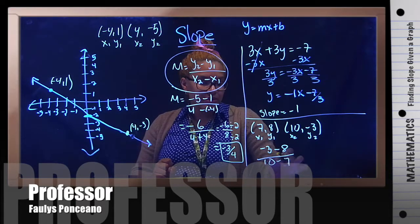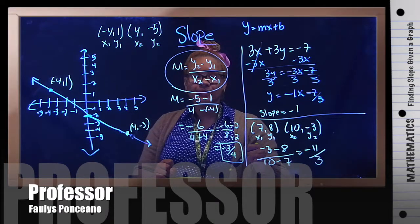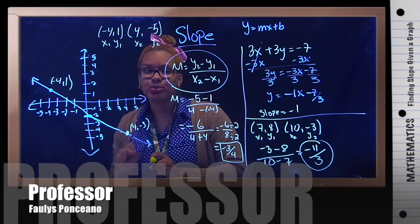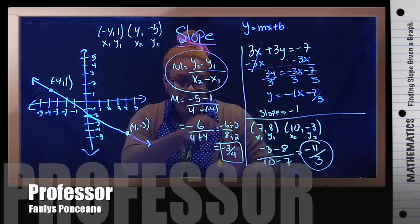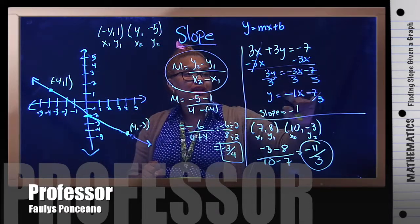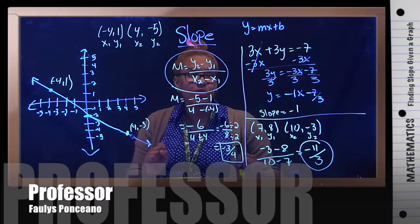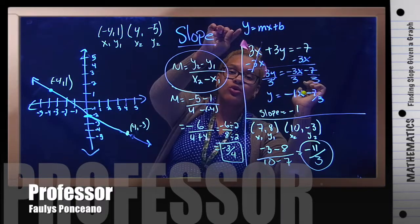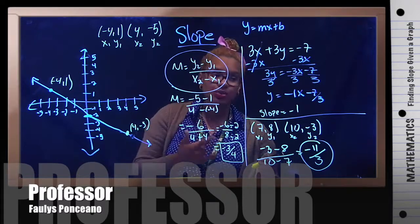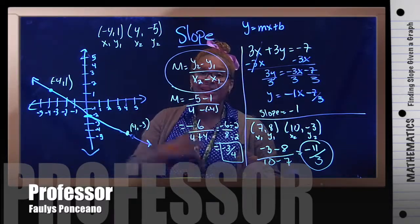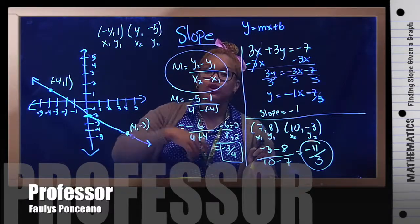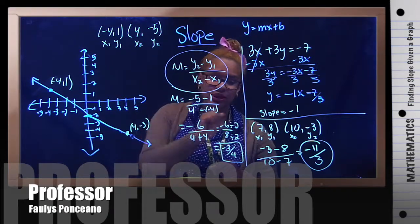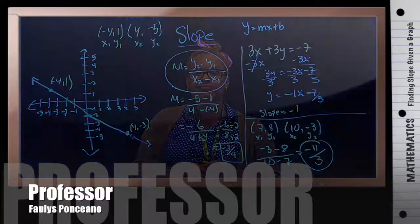Substituting into the formula: negative 3 minus 8 over 10 minus 7, which gives me negative 11 over 3. That's the answer. Recap: given a graph, choose two good points and use the slope formula. Given a linear equation, rewrite it in slope-intercept form by solving for y to read off the slope, which is negative 1. Given two points, use the slope formula and substitute to get your slope, negative 11 over 3.